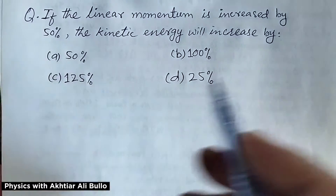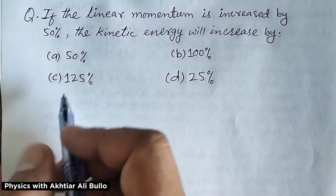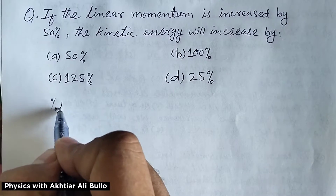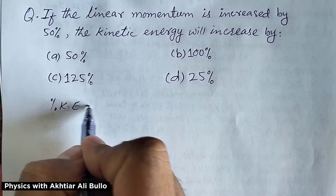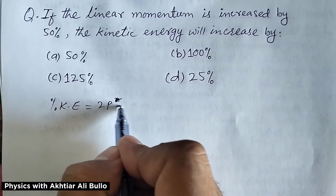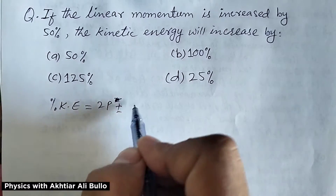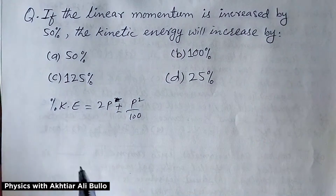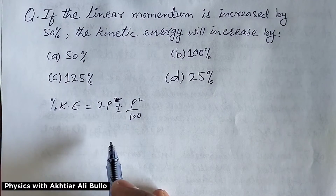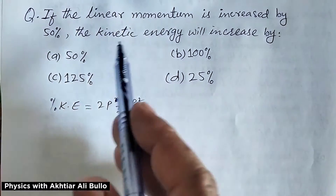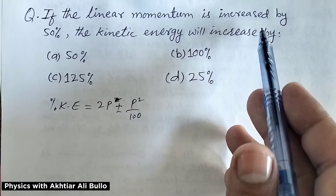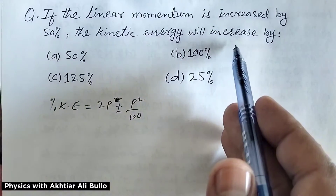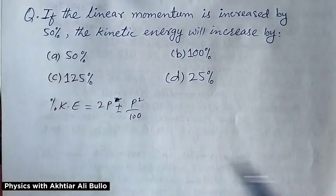The percentage change in kinetic energy is calculated by the formula: 2p ± p² / 100. Here, momentum is increased, so we have to calculate the percentage increase in kinetic energy.